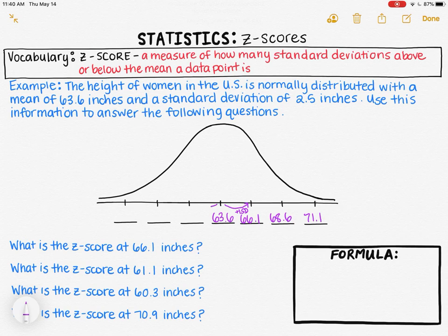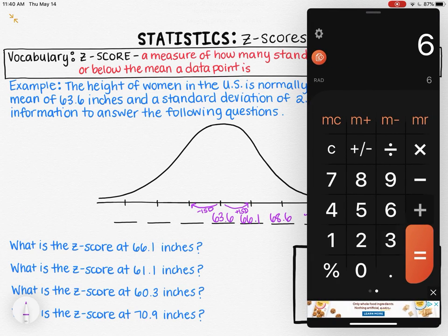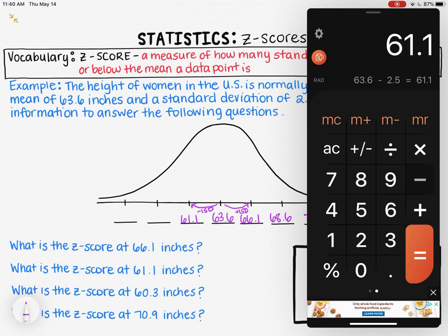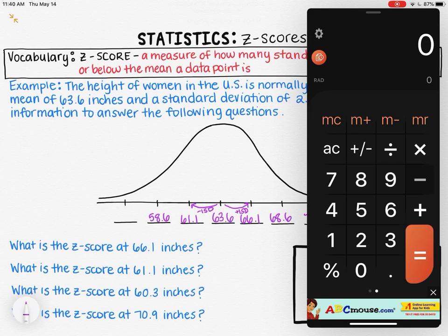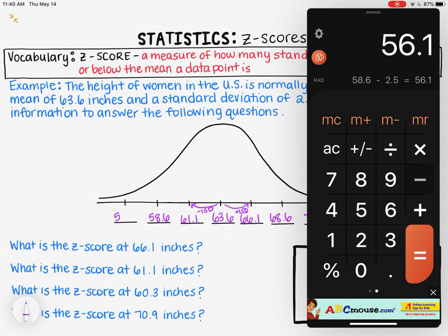We can do the same thing in the opposite direction, except we're going to subtract the standard deviation from the mean. Taking 63.6 minus 2.5 gives a height of 61.1 — one tick mark to the left. Then 61.1 minus 2.5 gives 58.6, which is two standard deviations below the mean. Finally, 58.6 minus 2.5 gives us 56.1 as the far left tick mark — three standard deviations below the mean.